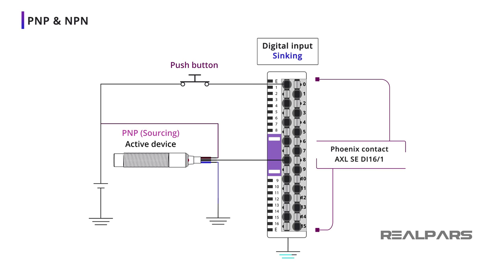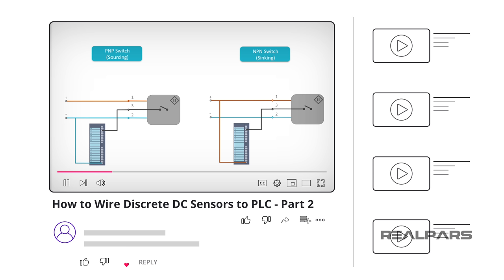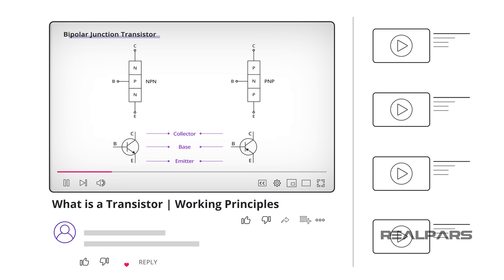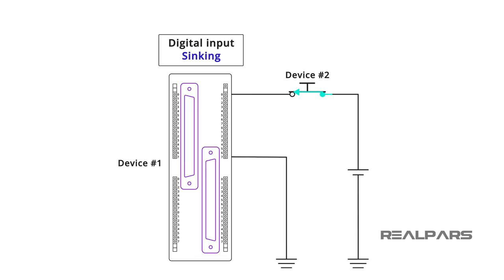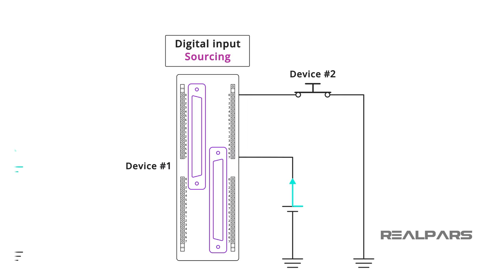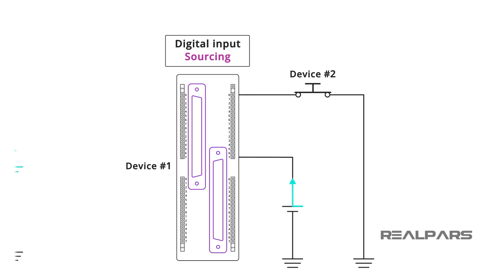If you want to learn more, you might want to review two of our other videos called 'How to Wire Discrete DC Sensors to PLC Part 2' and 'What is a Transistor Working Principles.' You can find the links in the description. Let's review what we've covered: a digital input module detects one of the two possible conditions of an input device — open or closed. Digital input modules detect either a no-voltage or voltage condition at the input. A sinking input module will have the current flowing into it; a sourcing input module will have the current flowing out of it. PLC vendors offer both sinking and sourcing digital input modules. An NPN device is a sinking device, and a PNP device is a sourcing device.